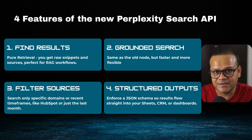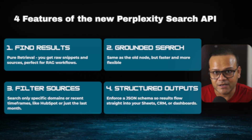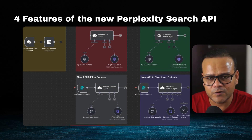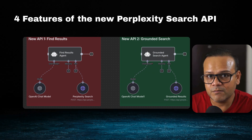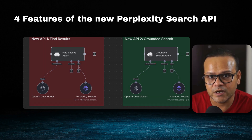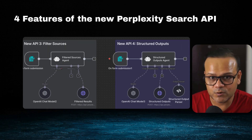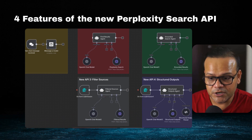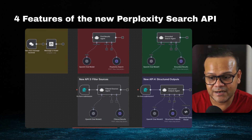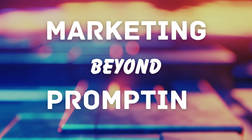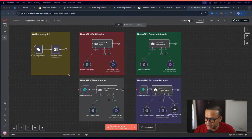The fourth feature, which I love the most, is structured outputs — instead of simple string responses you get outputs in arrays in a format that you define. I've tested all four in my workflow and also compared them with the old Perplexity node. Let's go through each one, what issues I faced, and what it can or cannot do.